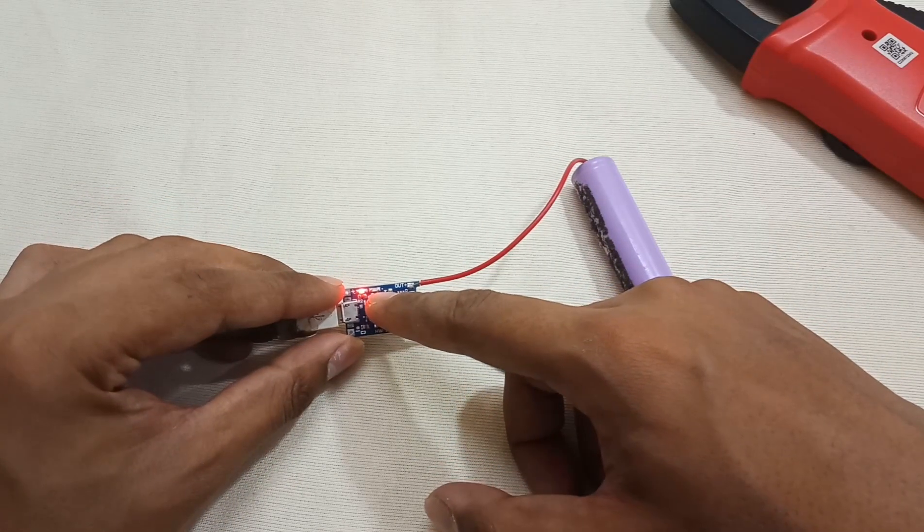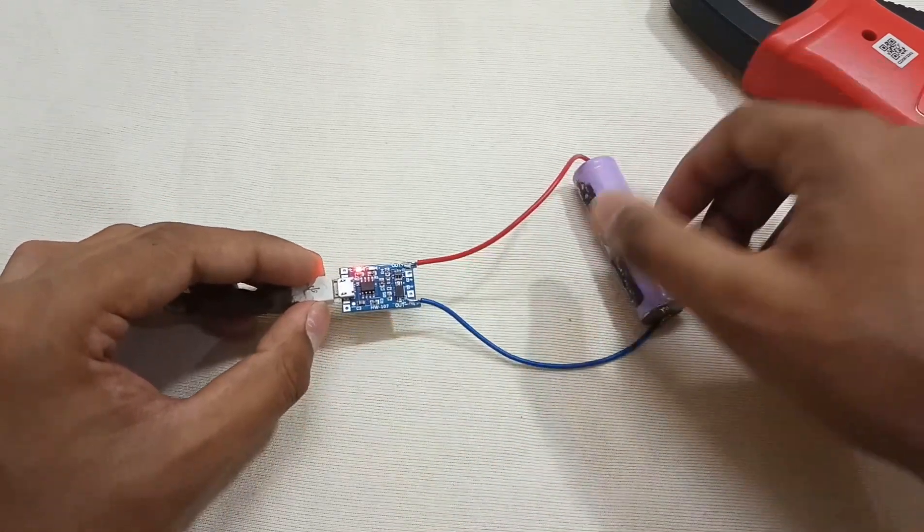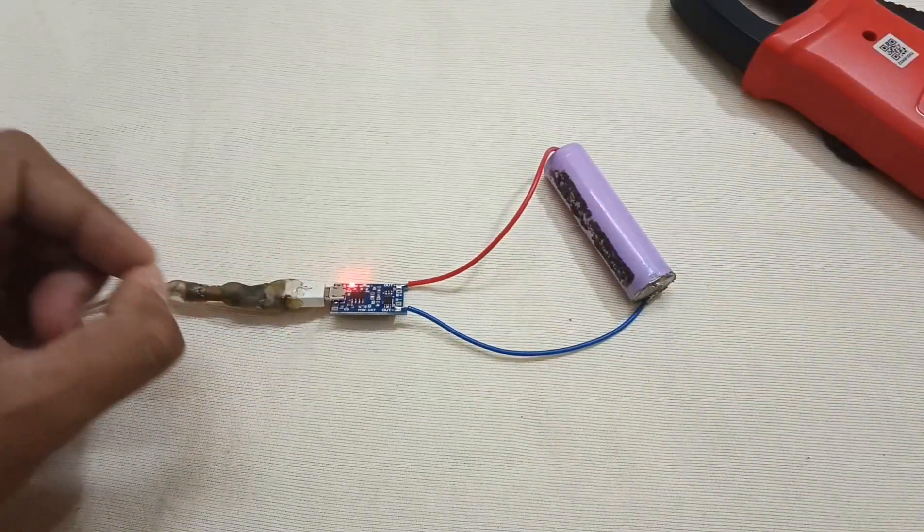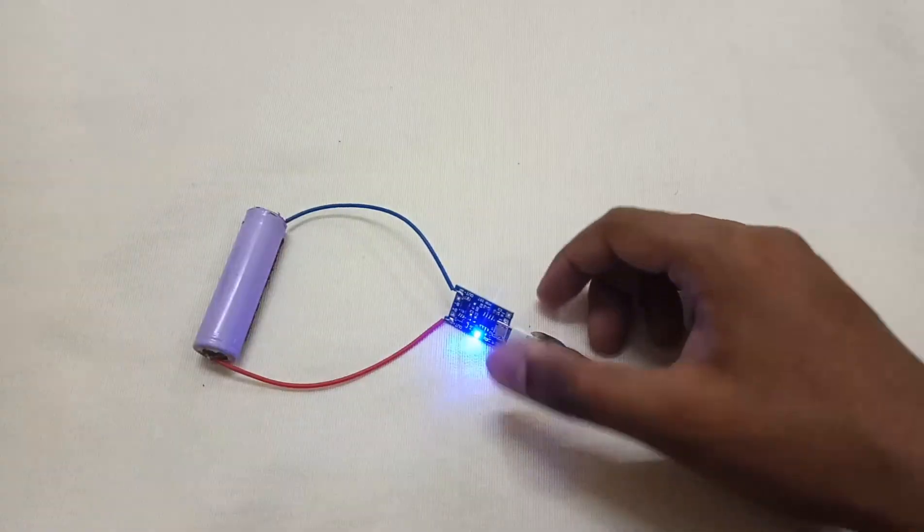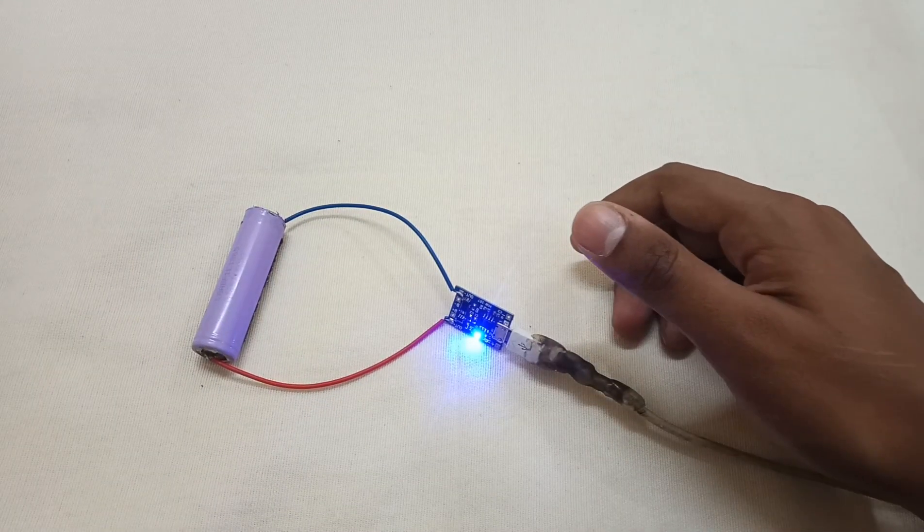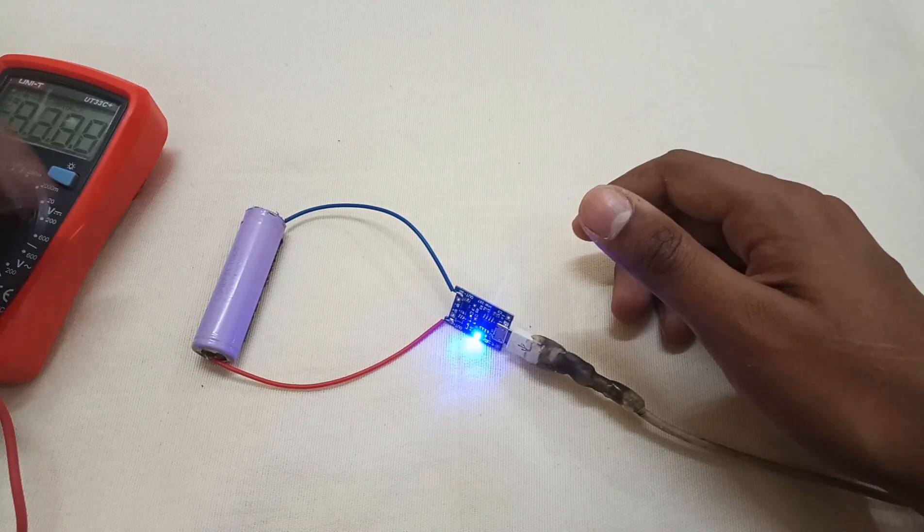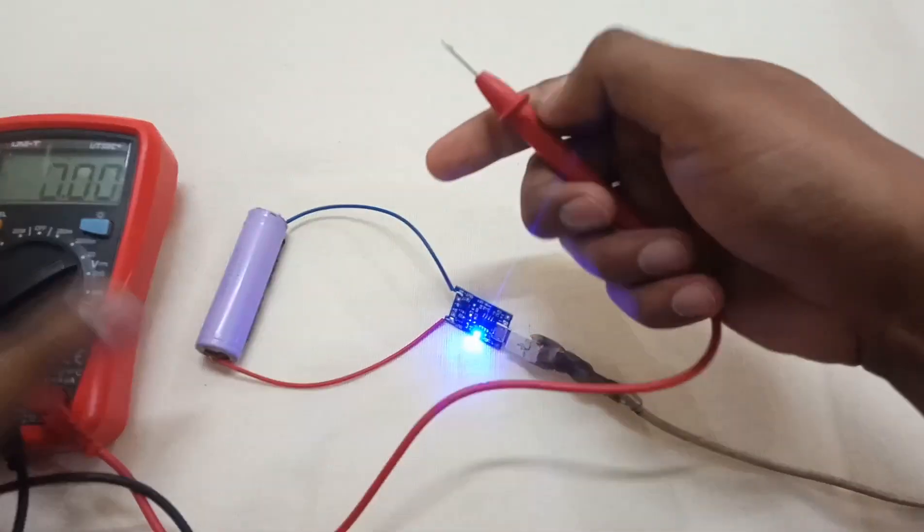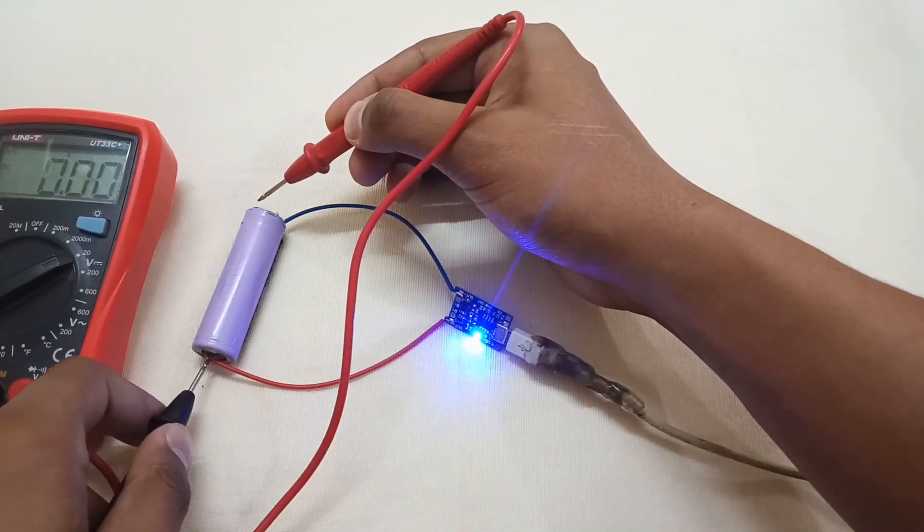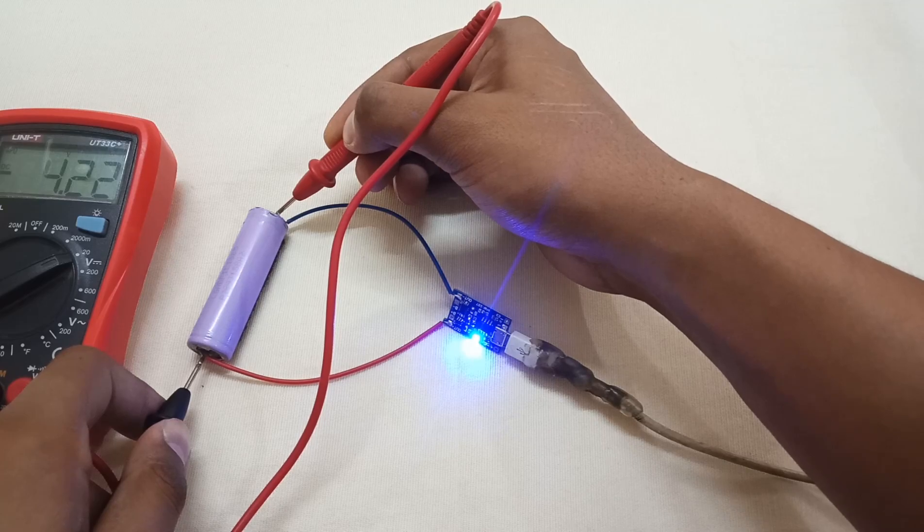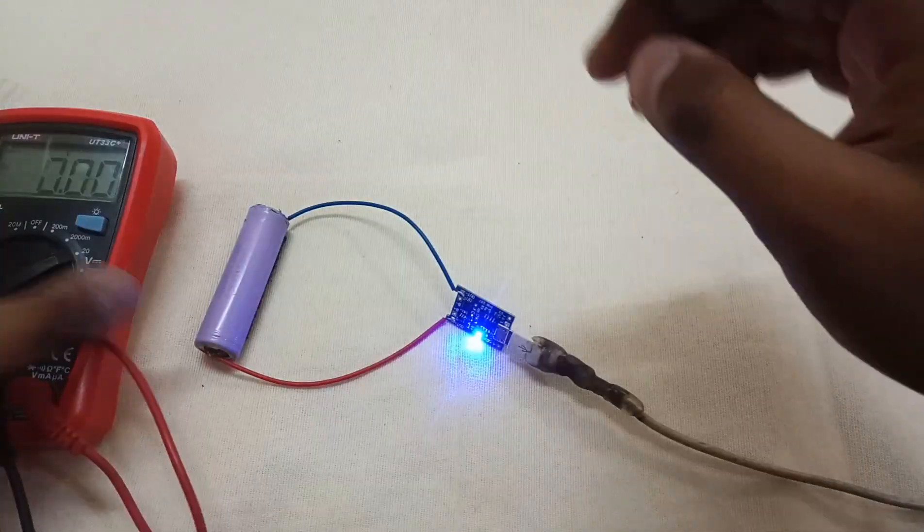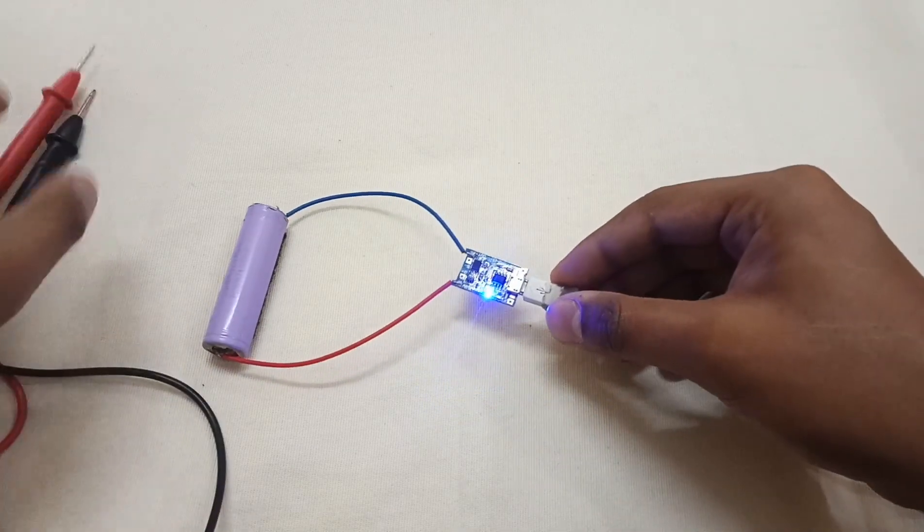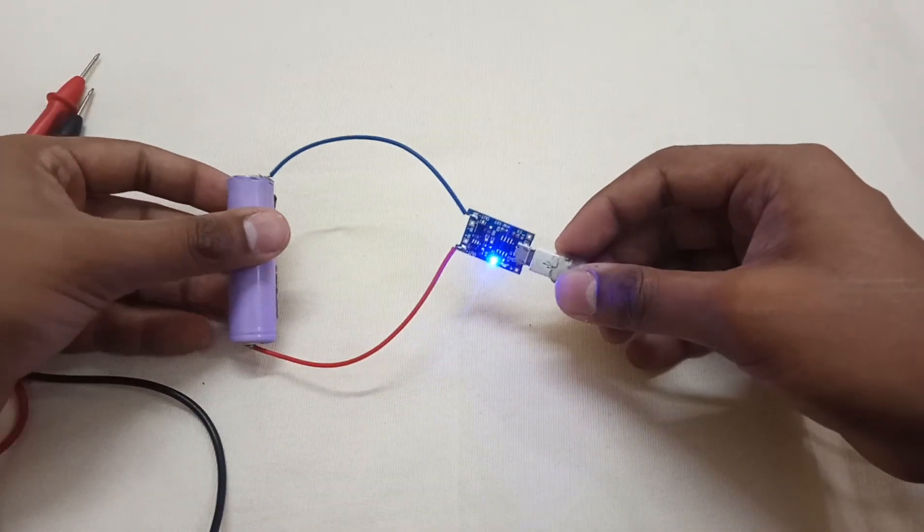Now the blue indicator light is on, which means that the battery is full. Let's check the voltage. It's showing 4.22 volts. The battery is now fully charged and it's also cut off the connection to the battery to protect it from overcharging.